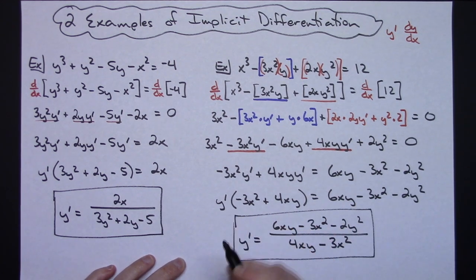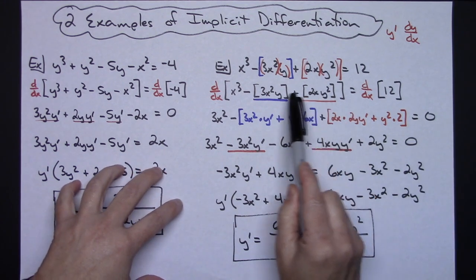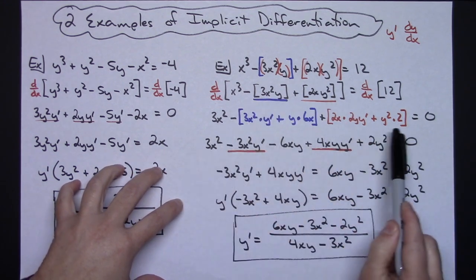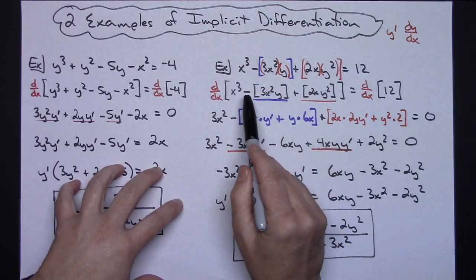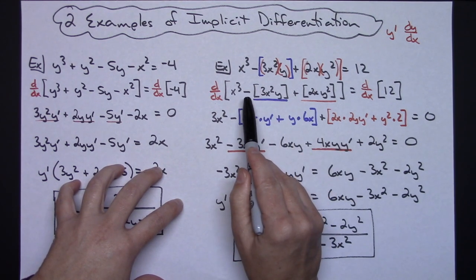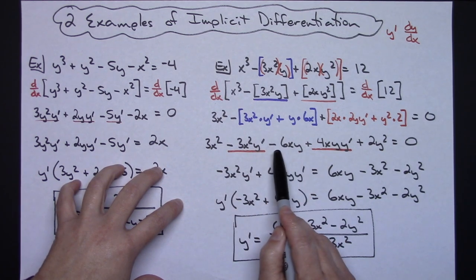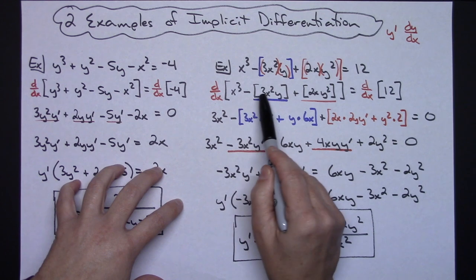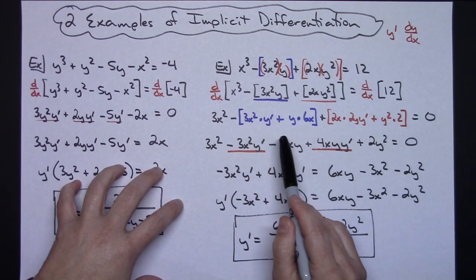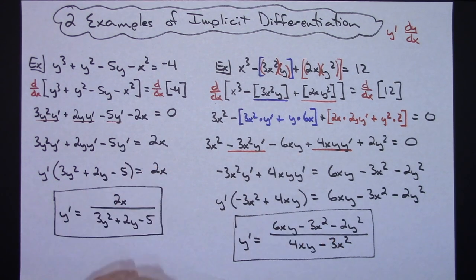That's a straightforward implicit differentiation problem, though you've got those two products in there. I would highly recommend boxing them off, because if you don't pay attention you will drop a negative — it will be right there on that term because you didn't realize it was minus everything in that product rule. That's the negative that usually gets dropped.